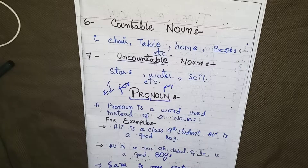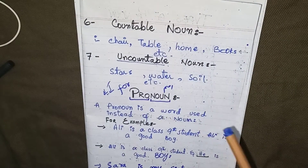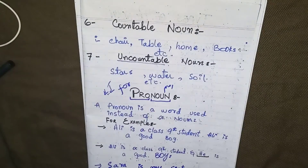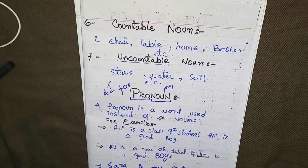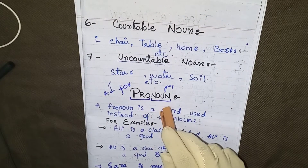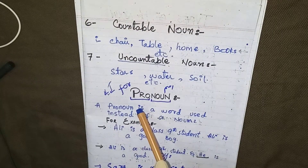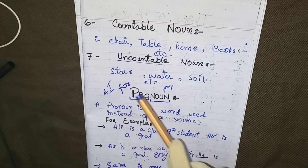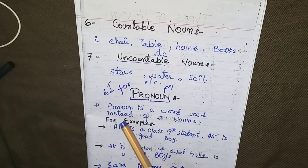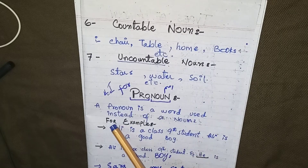In the previous lecture we discussed the noun and types of noun — there are seven types of noun. Today I am going to introduce the pronoun. What is a pronoun? 'Pro' means 'for' — a pronoun is a word used instead of a noun.